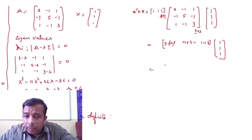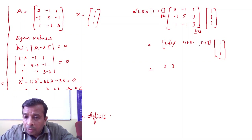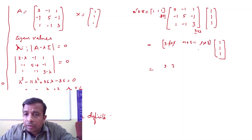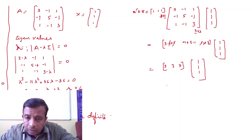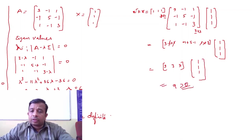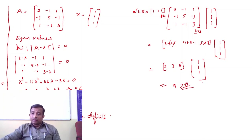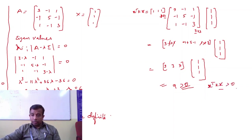The result of x^T K x works out to [3, 3, 3] times [1, 1, 1]^T, giving 9, which is greater than 0. So the condition x^T K x > 0 is also met.